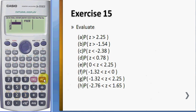Press AC, then press Shift 1, 7 to call this menu. For the first question, it's R, number 3, enter 2.25, and the answer is 0.0122. So the probability for z greater than 2.25 is 0.0122.